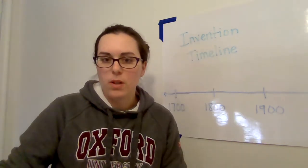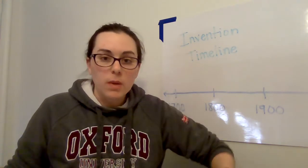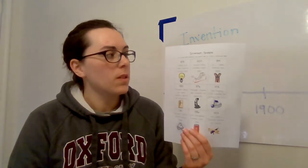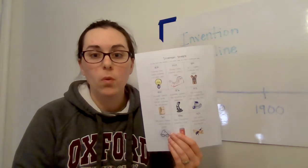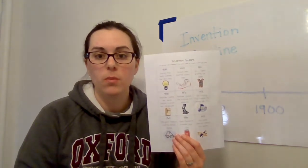1903 the Wright brothers invented the airplane. So you will cut these out and glue them in the correct order on that strip of construction paper. This might be a little tricky at first because these years are four digit numbers and we haven't really done a lot of work with putting four digit numbers in order.